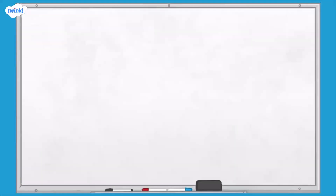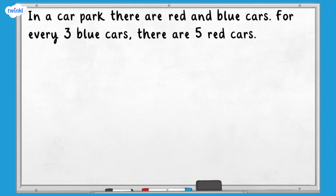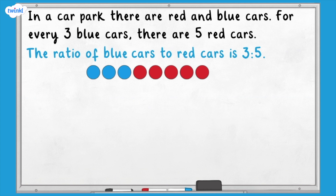Now it's your turn. If you find it helpful, you could use one of the representations we've looked at to help you answer the questions, or you might just want to use the abstract methods. In a car park, there are red and blue cars. For every three blue cars, there are five red cars. What is the ratio of blue cars to red cars? Pause here and write down the ratio, then unpause to check your answer. The ratio of blue cars to red cars is three to five.